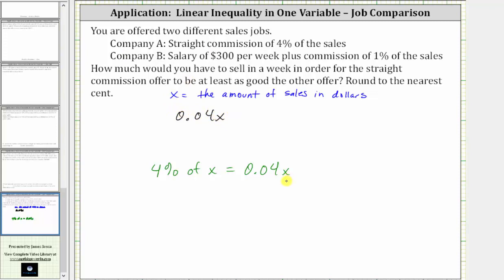And now let's write an expression for the weekly pay from Company B. For Company B, there's a weekly salary of $300, which gives us 300, and then plus a commission of 1% of sales, which would be plus 0.01x.